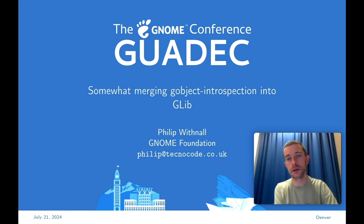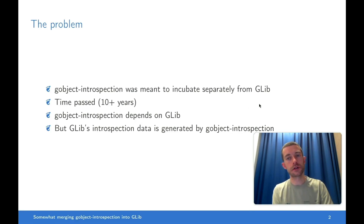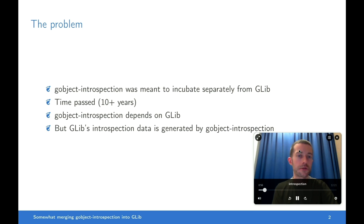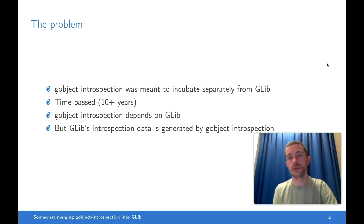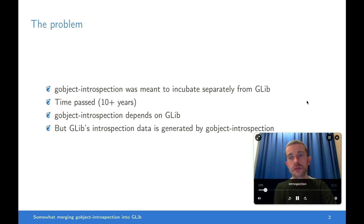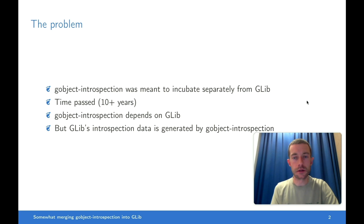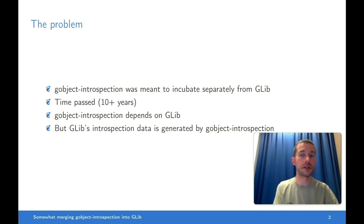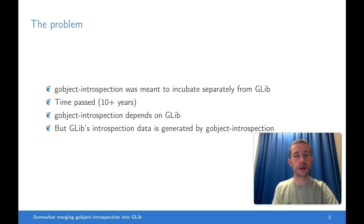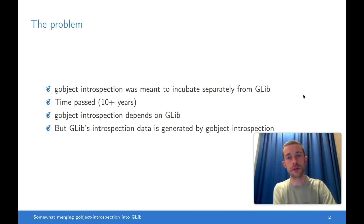When GObject Introspection was started as a project, it was deliberately started outside of the GLib git tree in order to allow it to incubate, and the idea was to eventually merge it in — so 10-plus years later, we've now done that. The previous status quo of having it out-of-tree worked okay, but it made for slow iteration because the introspection data for GLib was generated in the GObject Introspection build, so it was in a separate module and had to be periodically and manually updated from GLib. This also meant GLib couldn't use any of its introspection data internally, for example for building documentation.